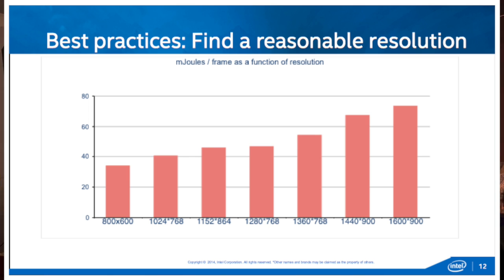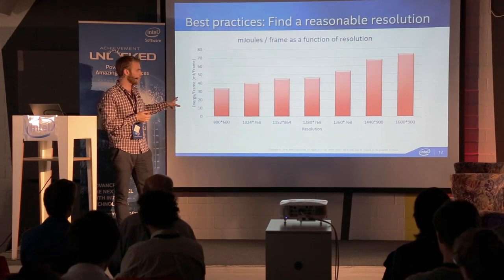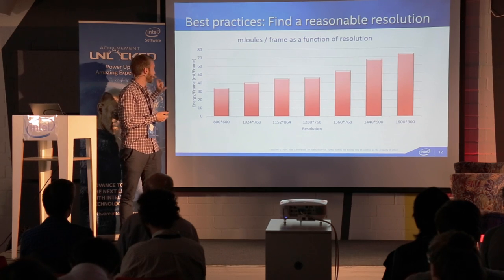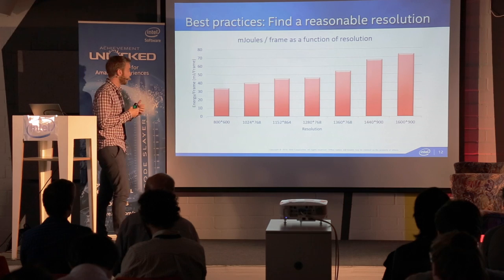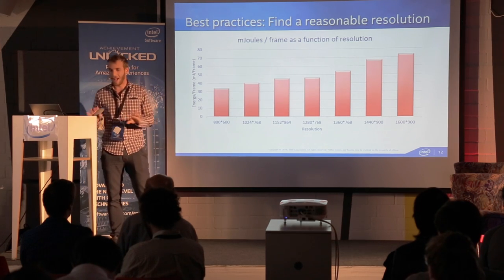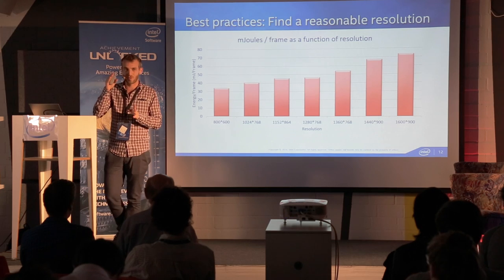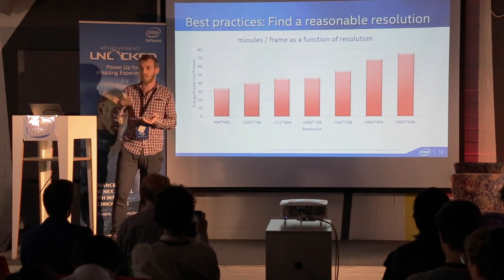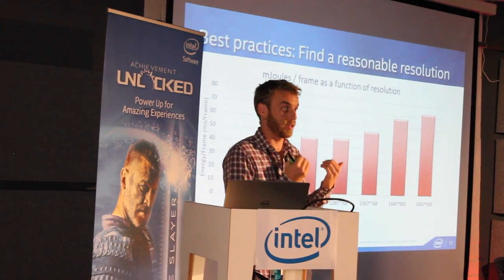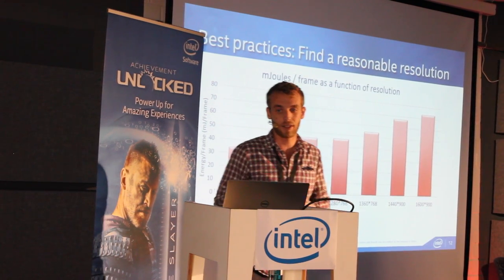If you want to save power, you need to do less work, and resolution is a good way to do it. Measurements done on a desktop system show the energy required to render each frame — going from 800x600 to 16:9 essentially doubles your power consumption. I'm not telling you to run games at 800x600, but the important point is to find the right resolution that balances power efficiency, performance, and visual quality. One approach is to render at a lower resolution and upscale as a post-processing effect to get the right amount of power saving with acceptable visual quality.